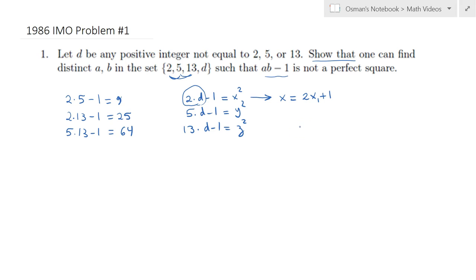Well actually I can continue here. So from here, if we proceed carefully, we would just realize that 2d is equal to x squared plus 1, which is 4x₁ squared plus 4x₁ plus 1 plus 1 plus 2.